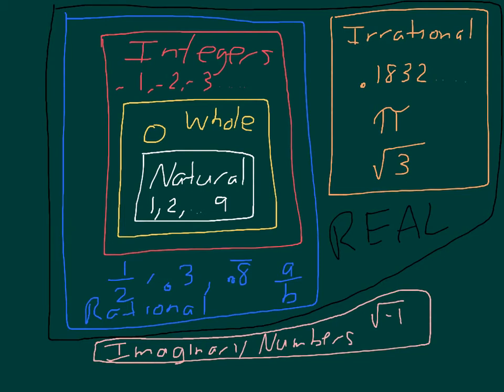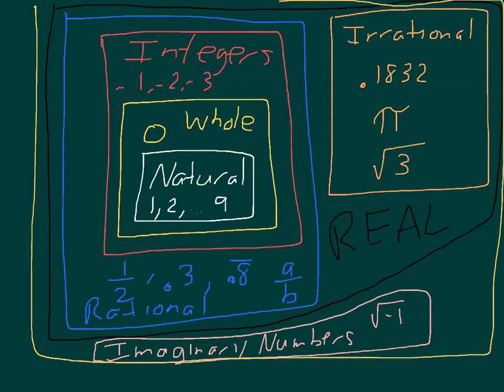So, instead, what they did was they came together and they brought, I'm going to run out of space here, they brought all these numbers together, and they came up with what is called the complex number system. And so, the complex number was all the real and all the imaginaries put together. Don't panic. We're not going to be dealing with complex numbers. We are going to stick with the real number system.